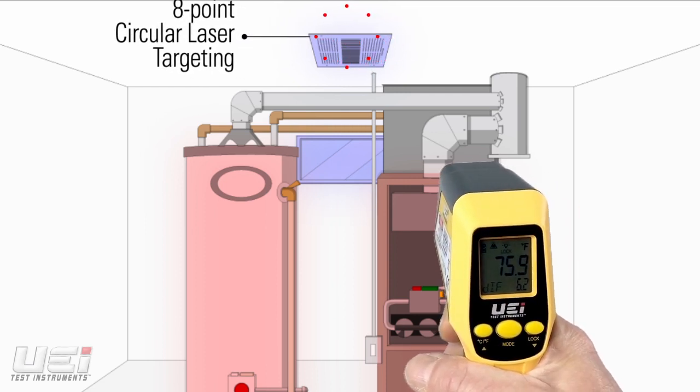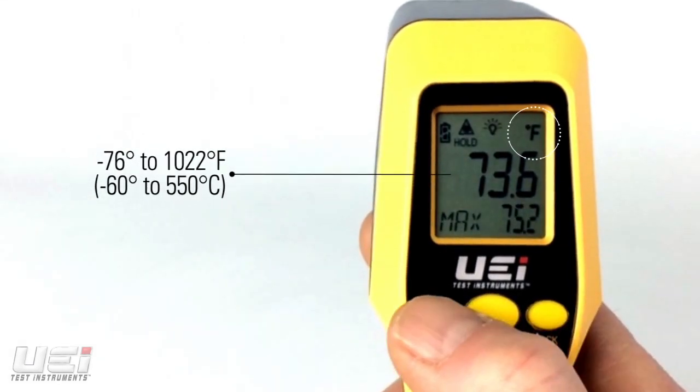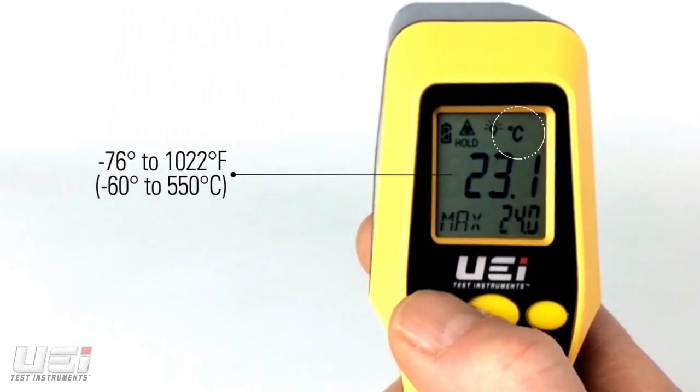This ends all confusion about the target area being measured. The INF195C offers the essential temperature range of minus 76 degrees to 1,022 degrees Fahrenheit.